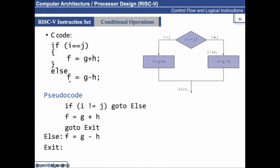Suppose a long piece of code has reached this point. If the condition does not satisfy, it will execute the next instruction. If the condition satisfies, it jumps to the else block and starts executing from that point onwards. Now, in assembly, you need to specify that after executing the if block, you must explicitly go to exit. Otherwise it is going to execute the else instruction also, meaning both cases would be executed regardless. So we should not forget to skip the else branch.